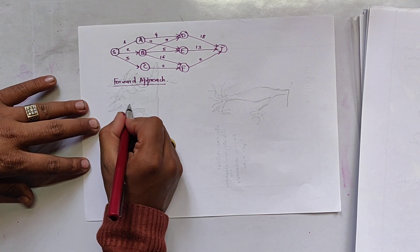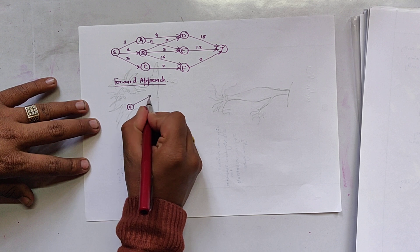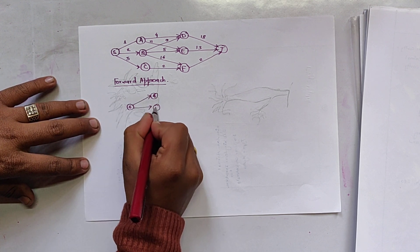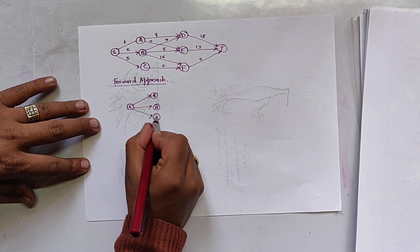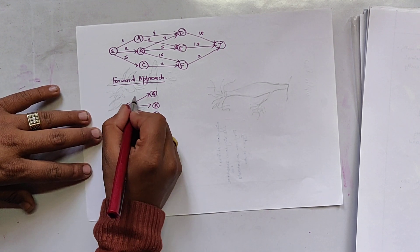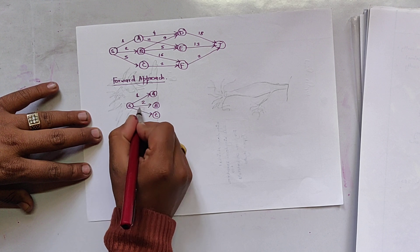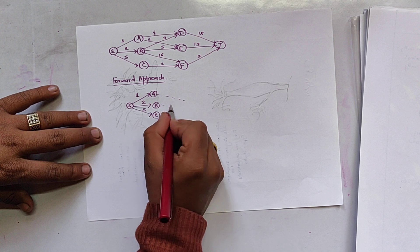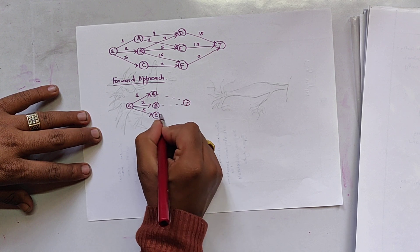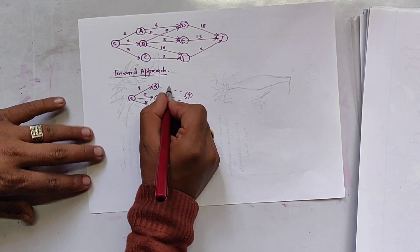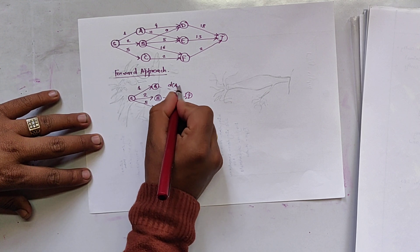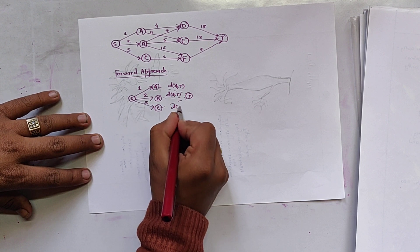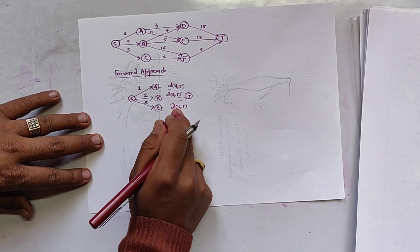So let us expand source node. Source node is adjacent to A, B and C. And its weight is 1, 2 and 5. So they are not directly connected to terminal node. So we write it T. So this is DAT, this is DBT, this is DCT. We have to find its value.